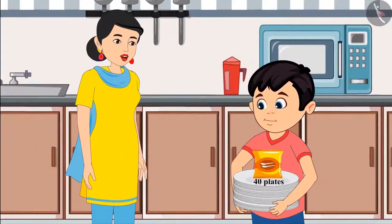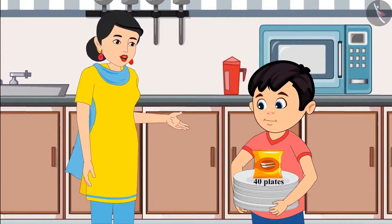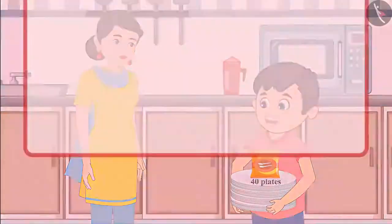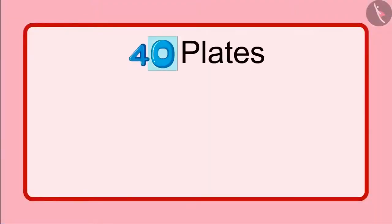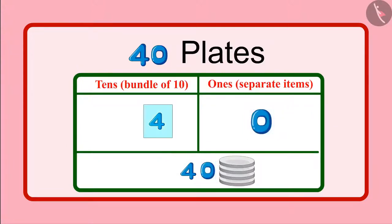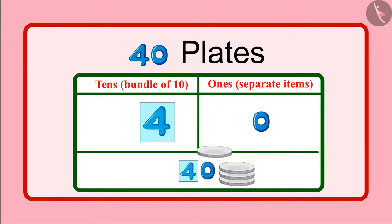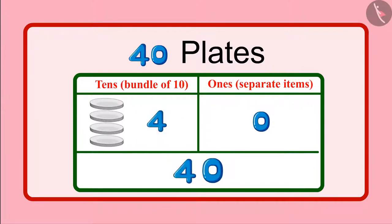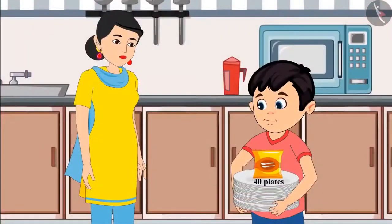Hey, no no Chotu, you are reading it wrong. It's written 40 plates, which is 4 groups of 10 plates. But Mummy, even 0 is written here — what about it? Chotu, here 0 is written in place of units, which means not a single open plate. And instead of 10, it is written 4, which means 4 groups of 10 plates — meaning 40 plates. So a total of 40 plates are there in this packet. Okay, now I have understood, Mummy.